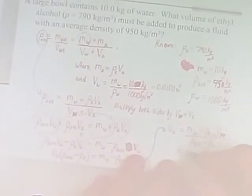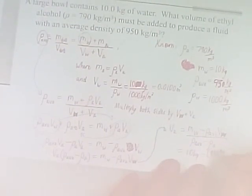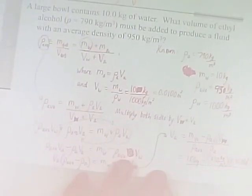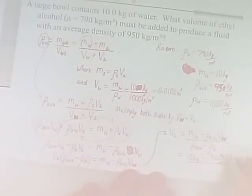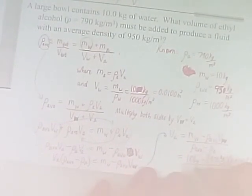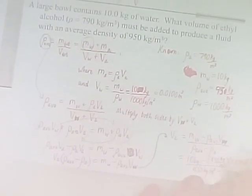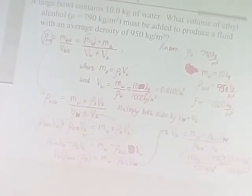So V_A equals (M_W − ρ_average · V_W) divided by (ρ_average − ρ_A). Plugging in: M_W = 10 kg, ρ_average = 950 kg/m³, V_W = 0.0100 m³, ρ_average − ρ_A = 950 − 790 = 160 kg/m³. This gives us a volume of 0.0031 cubic meters of alcohol.